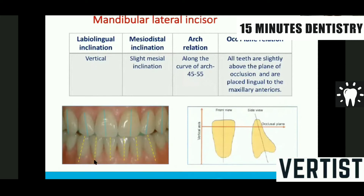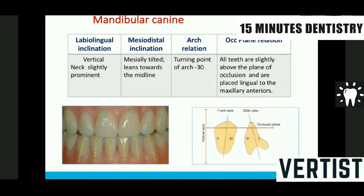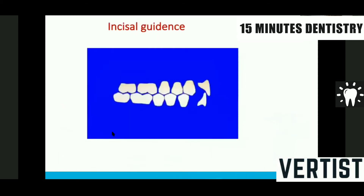The lateral incisor is slightly mesially inclined and the canine is more mesially inclined. In arch form they should follow the arch form to a tune of 45 to 50 degrees — meaning it has to be turned a little more, just like the upper lateral incisor. The lower canine is vertical in labiolingual inclination, mesially tilted in mesiodistal inclination, and should turn around 30 degrees — just like the upper canine. It is also placed slightly higher than the occlusal plane.